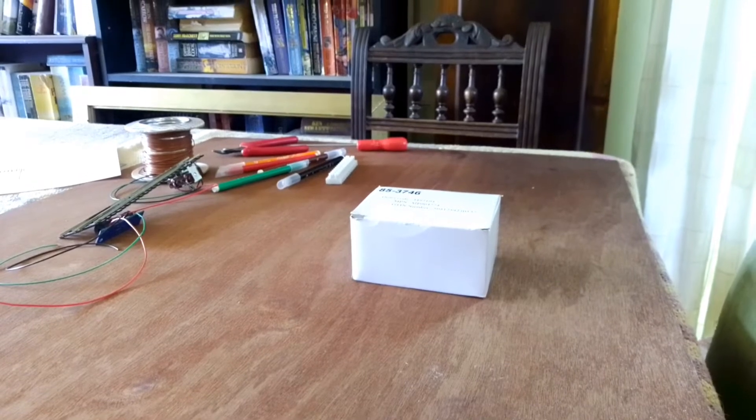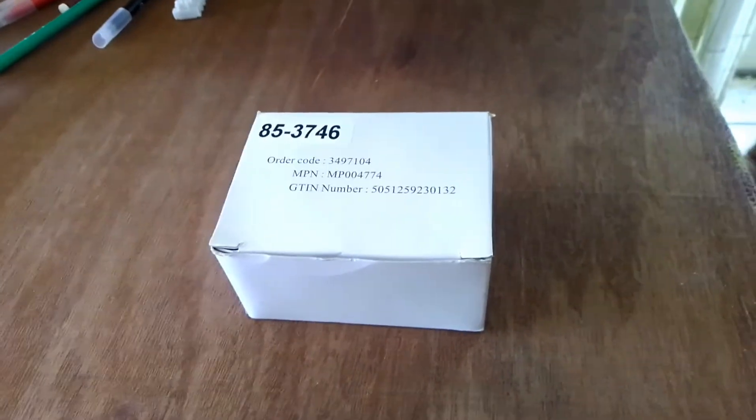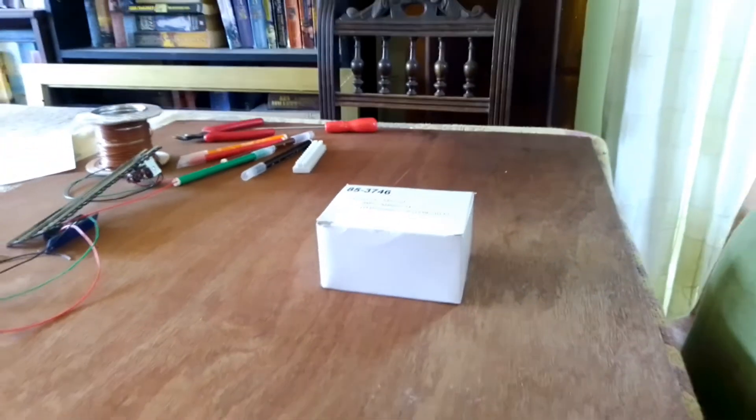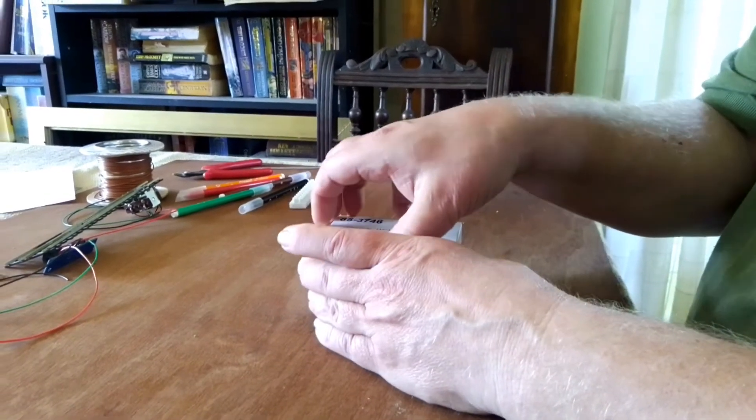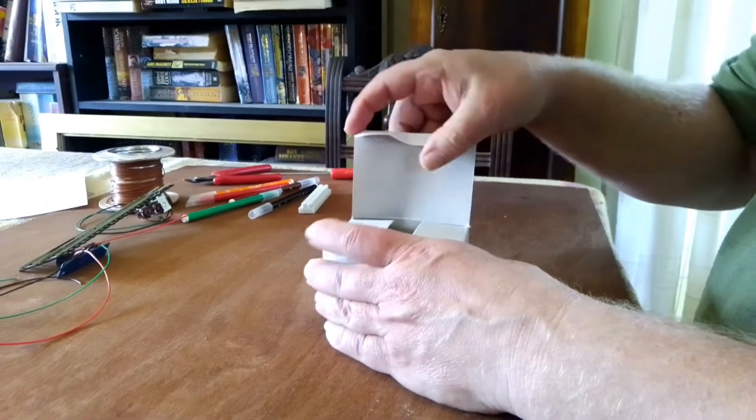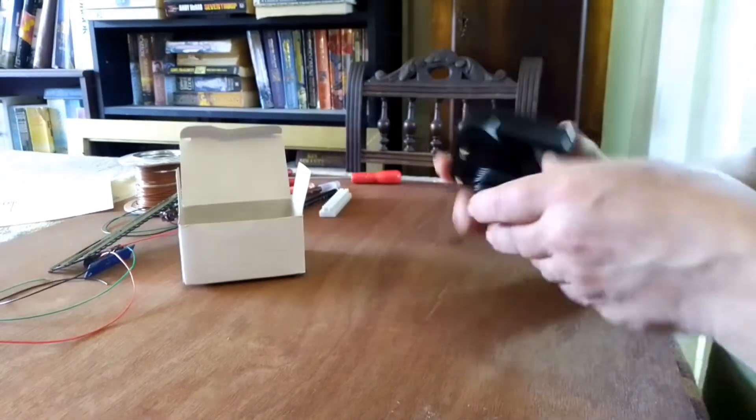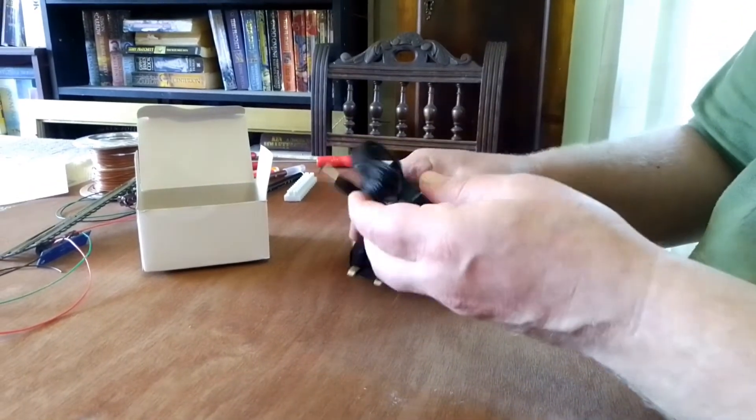We need some power to power the point motor. You can either use AC or DC, but you need a voltage of more than 12 volts. It barely moves at all at 12 volts. Here we've got a 24 volt DC power supply rated at one amp. This is a type of power supply that imitates a plug and you just plug it into the socket.